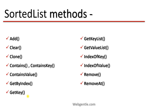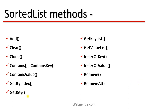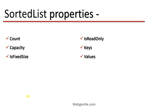Next is Remove. The remove method is used to remove a particular element by passing its key — that key along with its value will be removed from the sorted list. Next is RemoveAt — using the removeAt method you pass the index, and the element at that particular index will be removed.